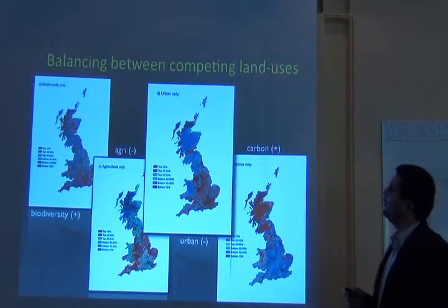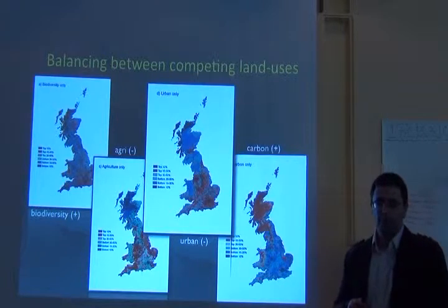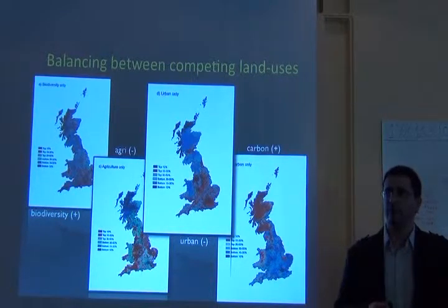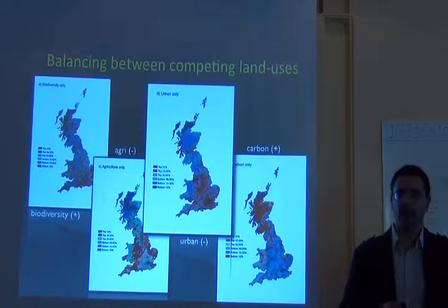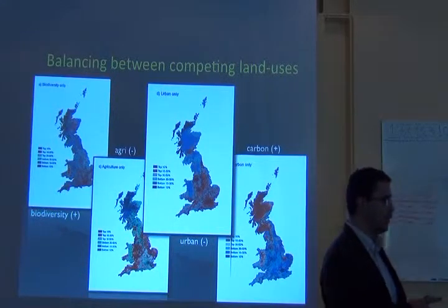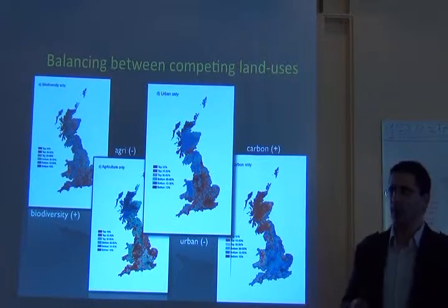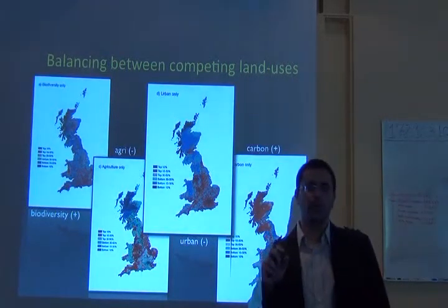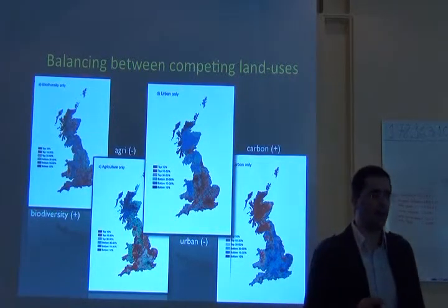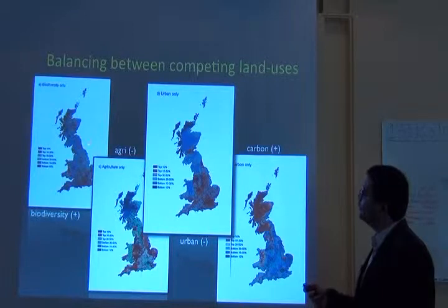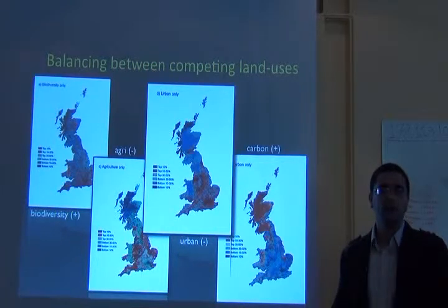You can also balance competing land uses. Since version 3 of Zonation, you can do this by assigning negative weights to features you want to avoid. When looking at the formula for calculating marginal loss in core area Zonation, there is only one cost — the cost for site i.